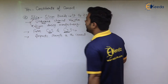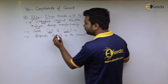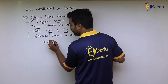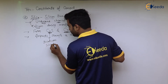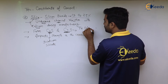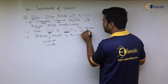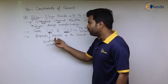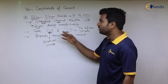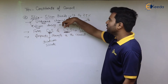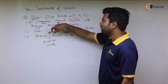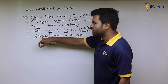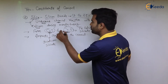Silica reacts with calcium during the manufacturing process and forms dicalcium silicate (C₂S) and tricalcium silicate (C₃S). The function of these two compounds is that they impart strength to the cement. So silica, through its reaction with calcium, forms these two compounds which give strength to the cement.